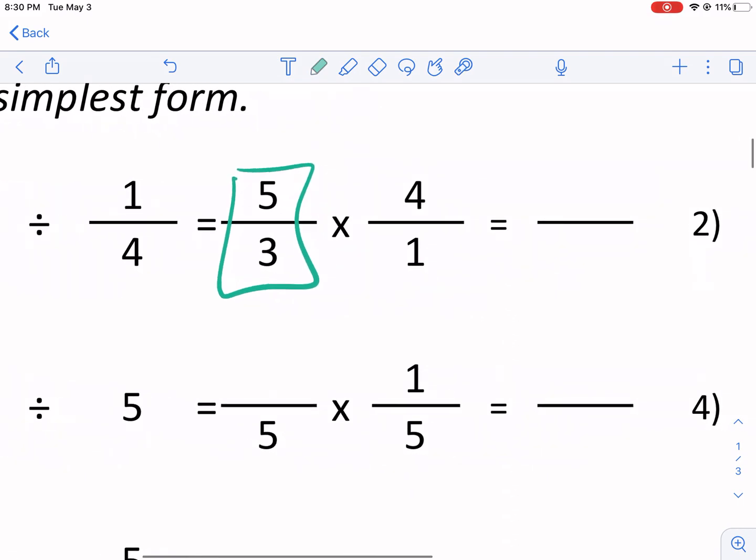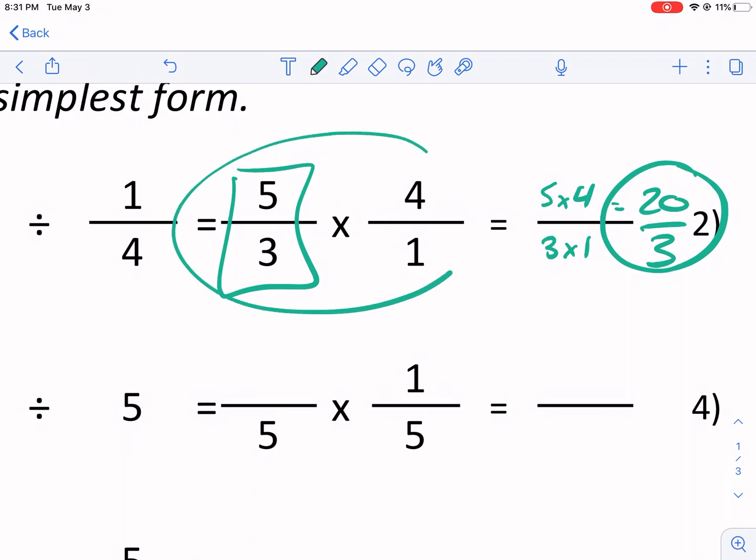So now we just do our multiplication rules, which are, and I don't think I mentioned this before, top times top and bottom times bottom. The numerators times each other and then the denominator times the denominator. So we get equal 20 over three. And that's our final answer. Pretty simple.